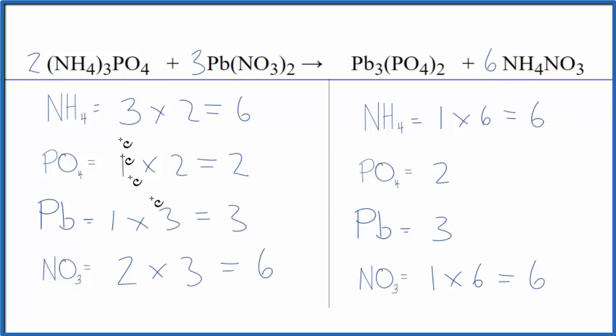I'm done, this equation is balanced. So you can see the value of counting these polyatomic ions as just one thing if they appear on both sides of the equation.